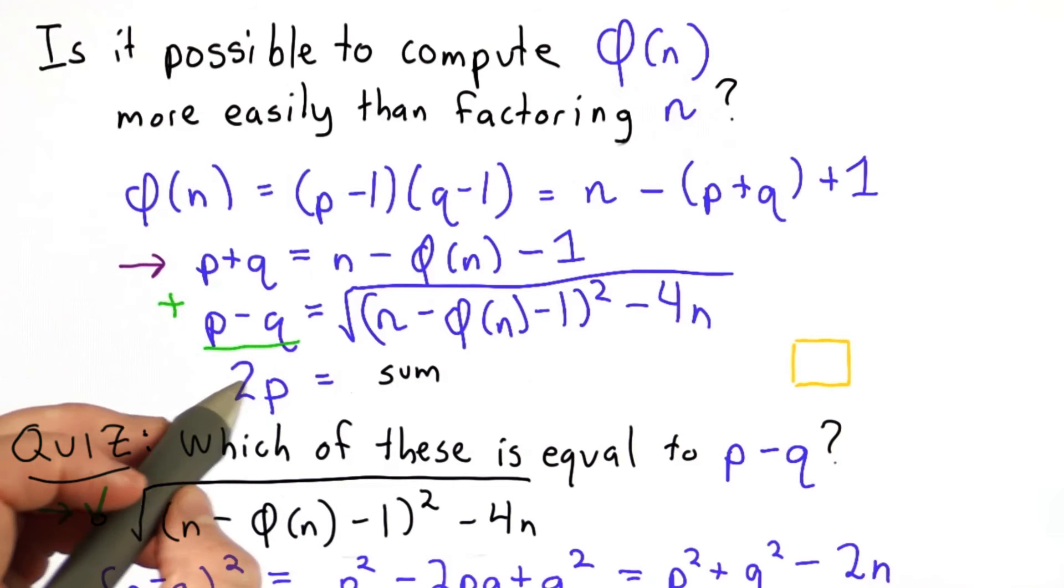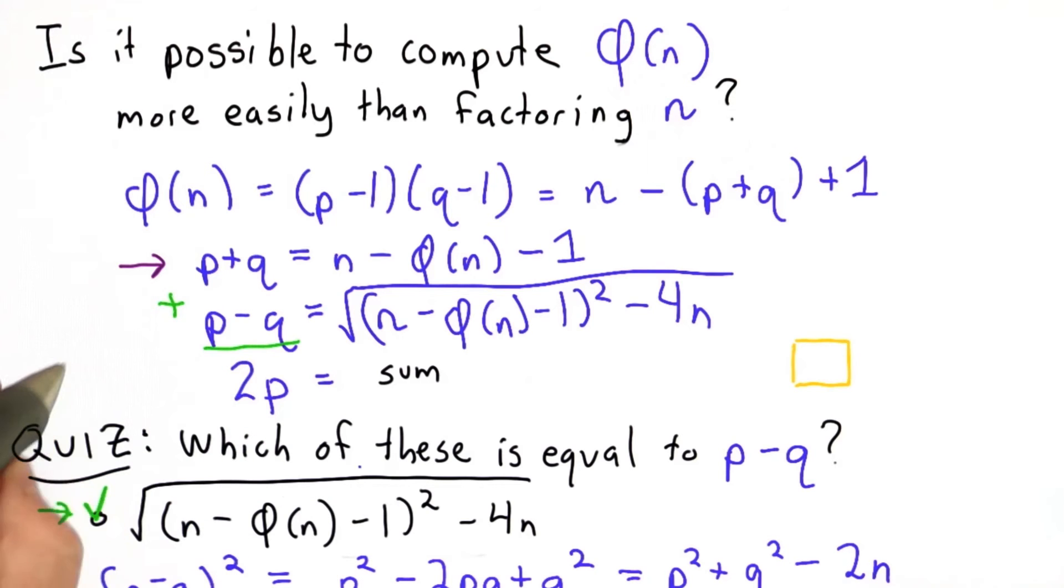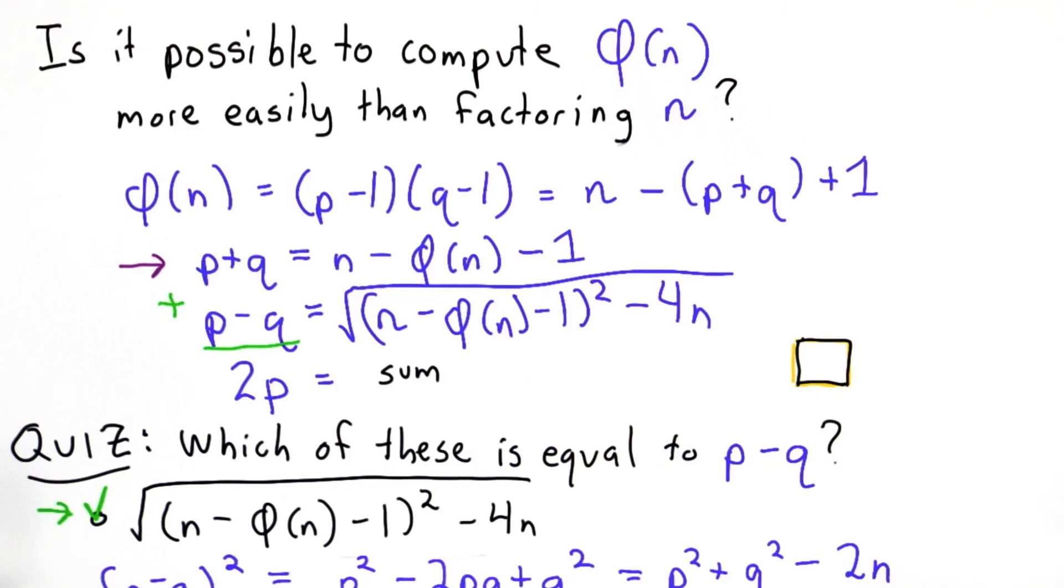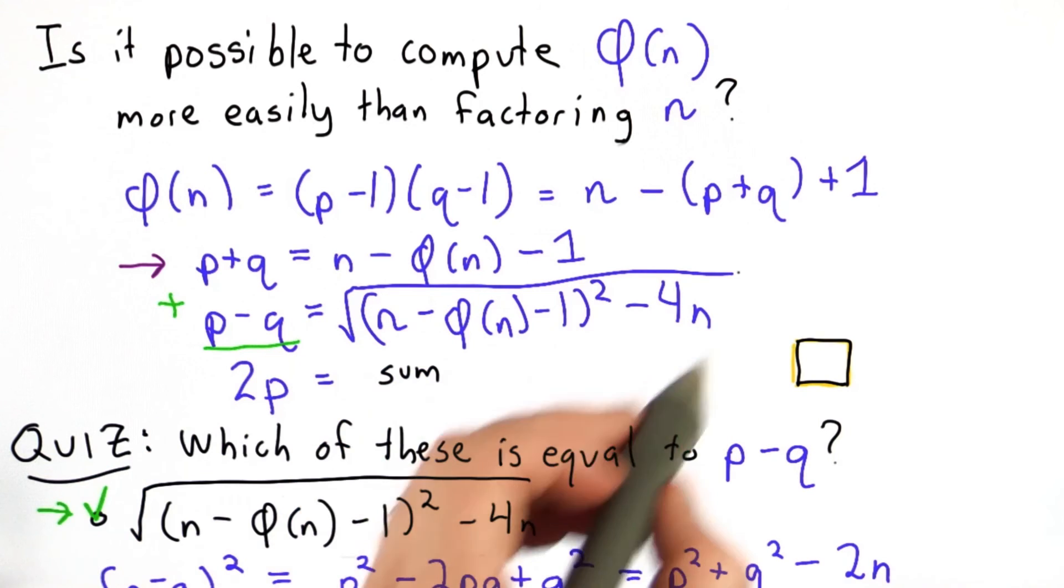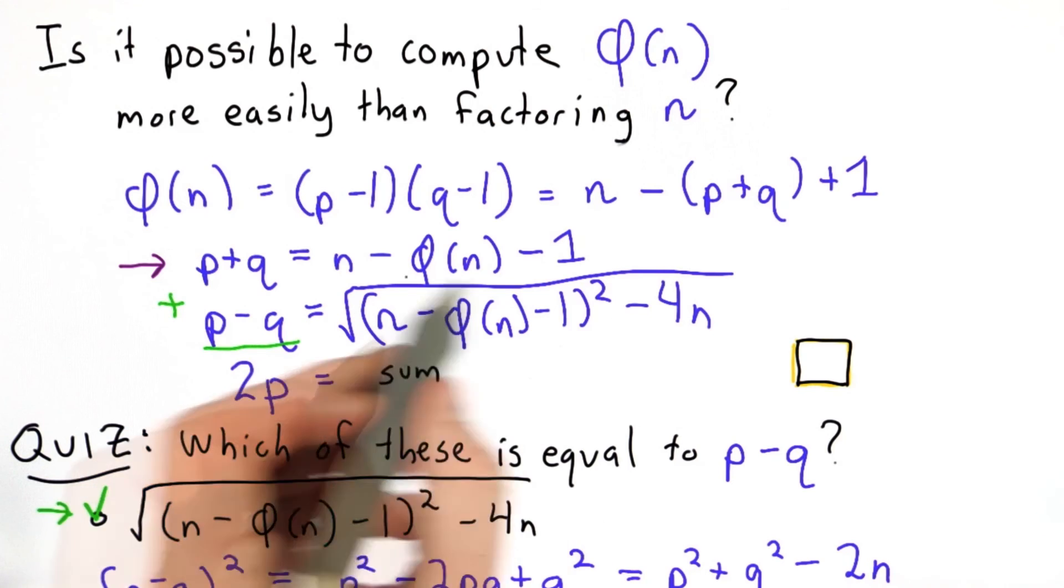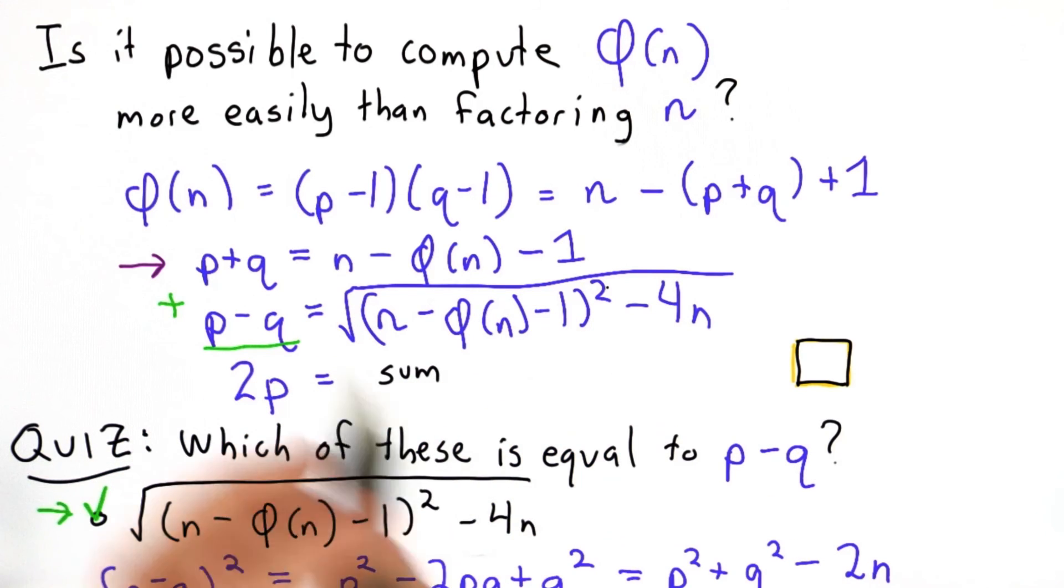And once we have the value of p, we've factored n, because we can divide n by p, easily get the value of q. So our nice little box here turns into our proof is finished. And I should emphasize that there's no difficult computation to do here. We're doing subtraction and squaring and multiplication, but the square root is a discrete square root. But discrete square roots are not difficult, and we know that this result will be an integer because the value of p must be an integer.